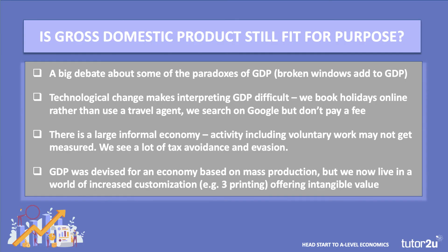Technological change also makes interpreting GDP increasingly difficult. Many of the things we used to pay for we no longer do — we book our holidays online rather than use a travel agent, we search on Google but don't necessarily pay a fee for doing so. Third, there's a large informal economy which GDP typically doesn't pick up. Millions of people involved with charitable and voluntary work providing goods and services are not necessarily captured and measured by GDP. We also see a lot of tax avoidance and tax evasion, which deflates the figures.